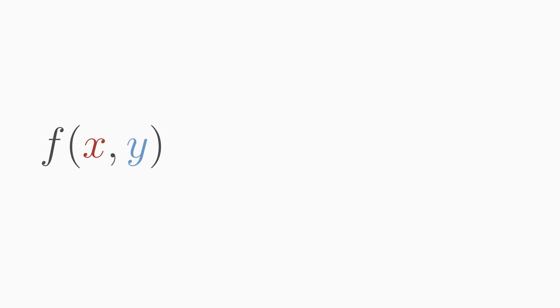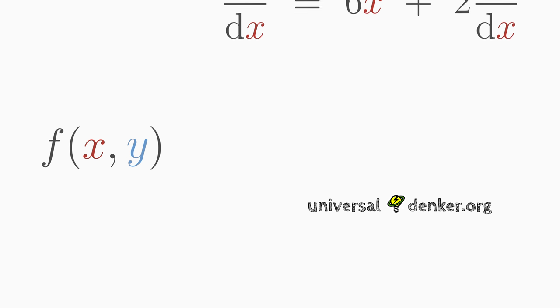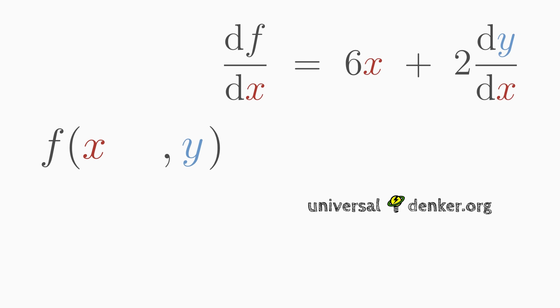Let's summarize the difference. In a partial derivative, the parameters x and y of the function f are independent of each other. In the total derivative, on the other hand, x can depend on y, or as in our example, y can depend on x.